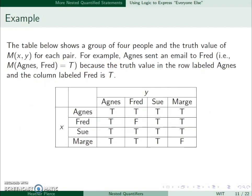So for example, we have this table that gives a group of four people and the truth values of M(x,y) for each pair. For example, Agnes sent Fred an email, so M(Agnes, Fred) is true.